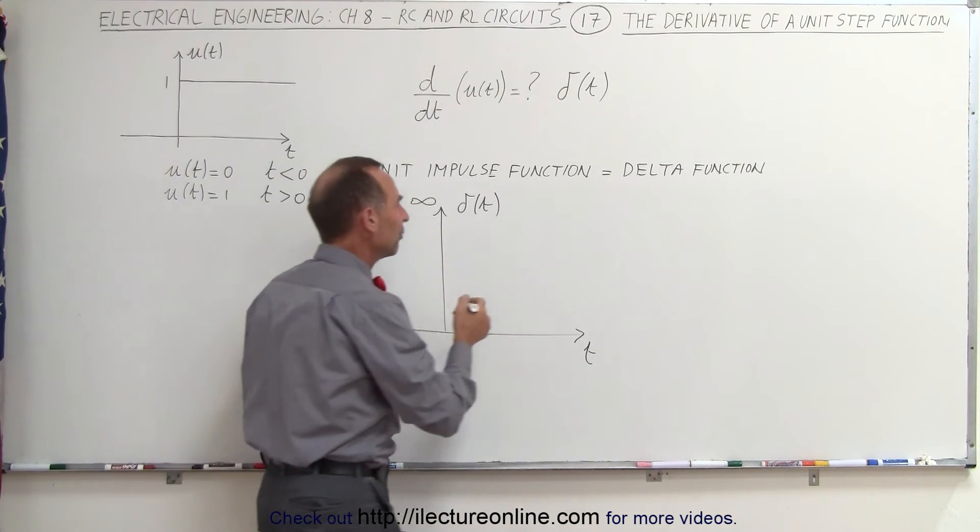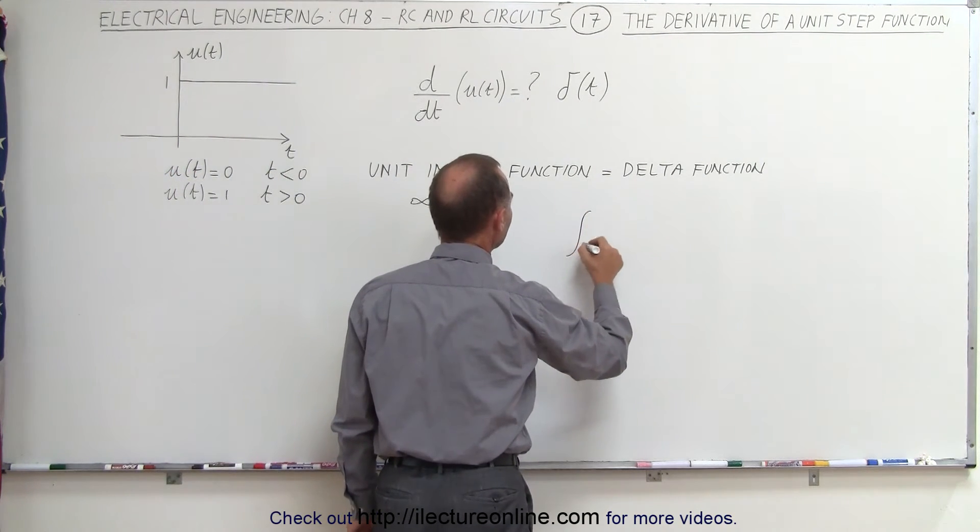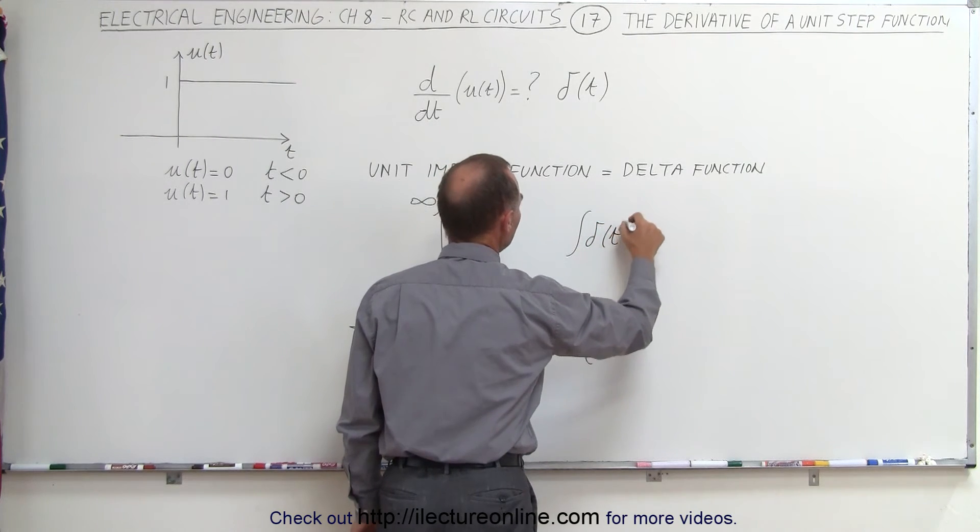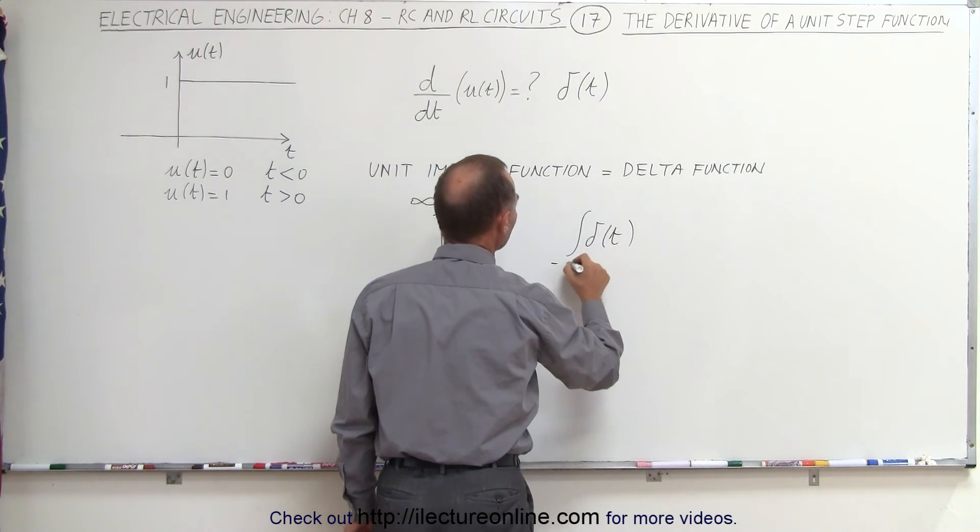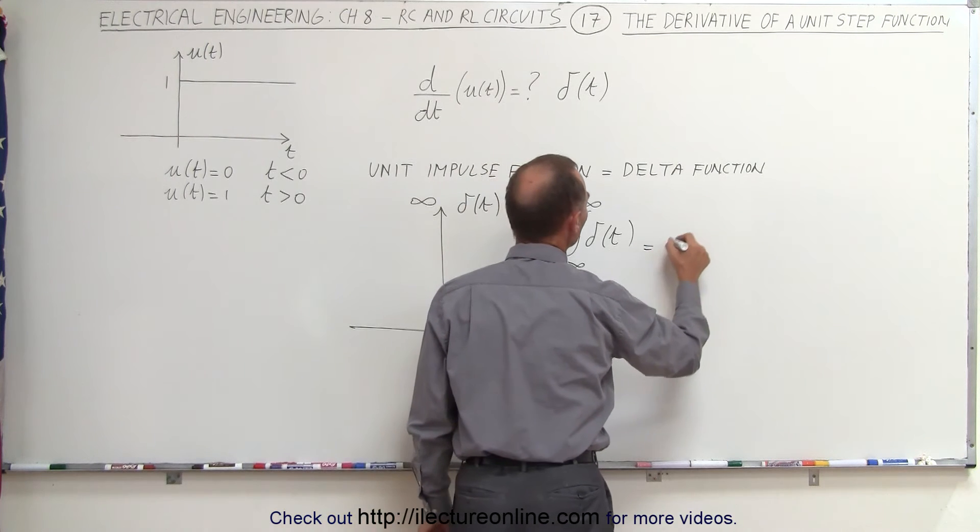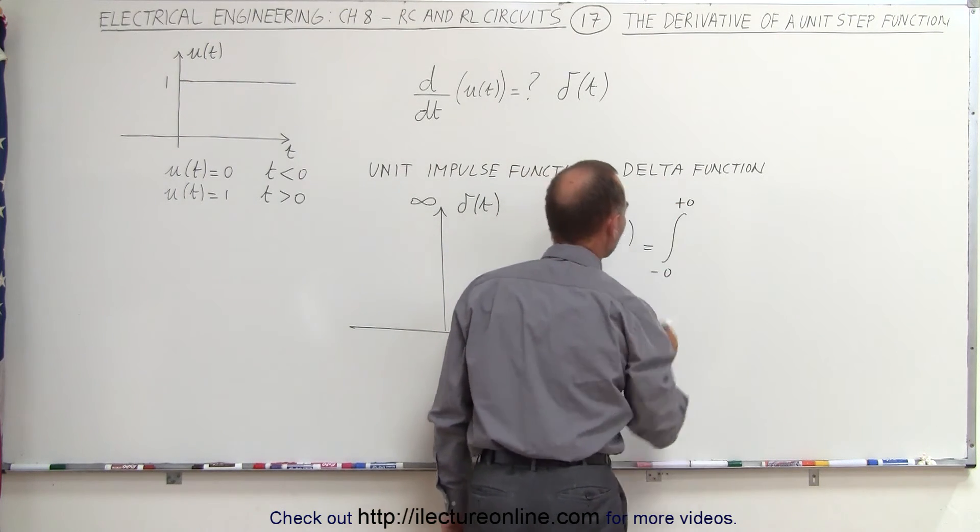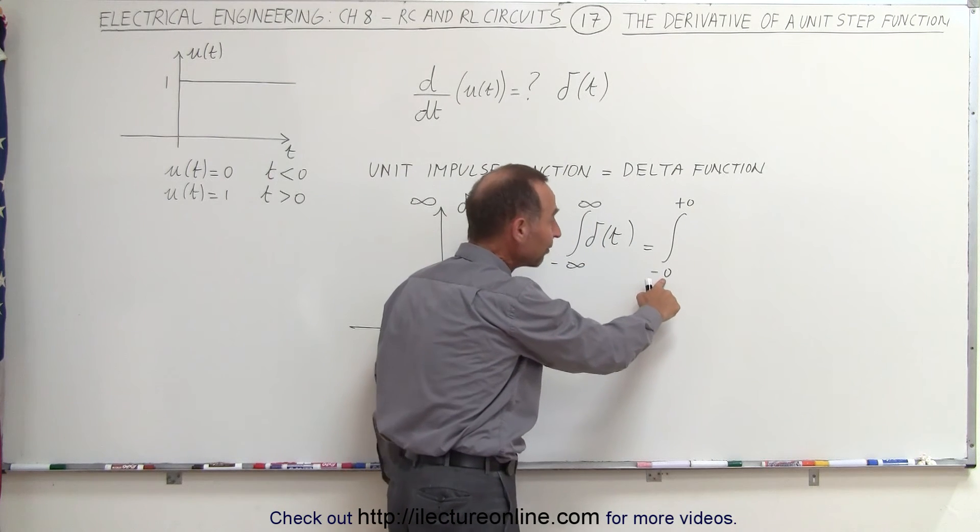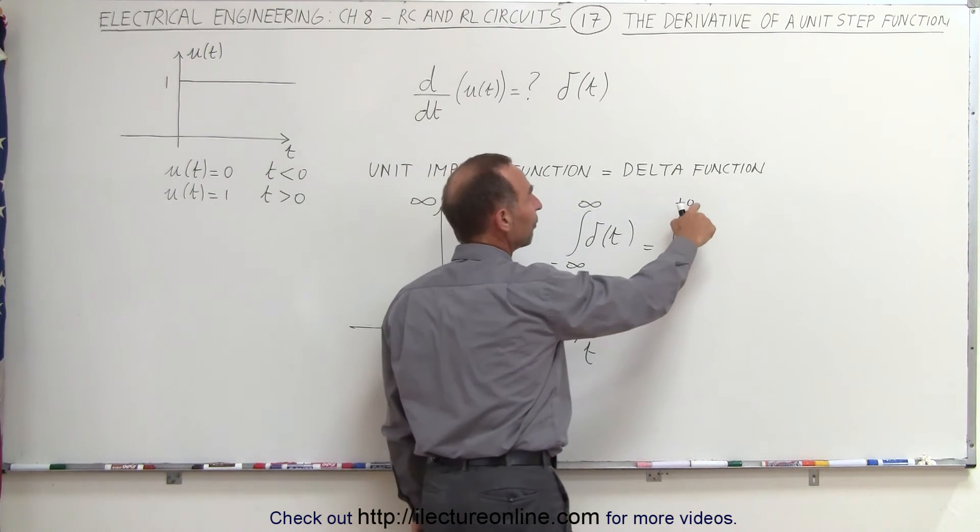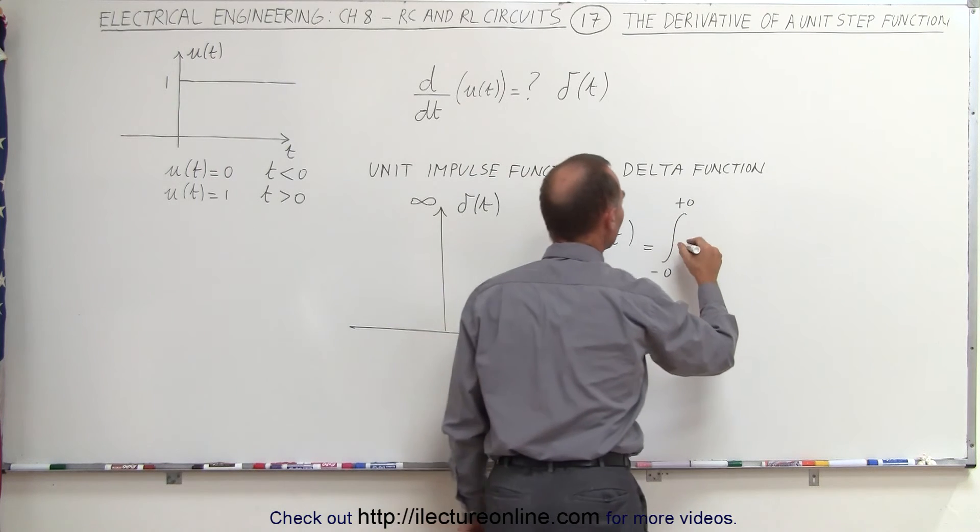Well, it turns out that if we integrate that delta function from minus infinity to infinity, which basically would be equal to the integral from minus 0 to plus 0, this means a very small amount of time before 0 and a very small amount of time after 0 of